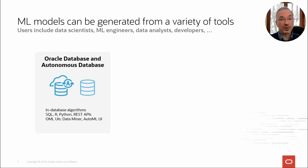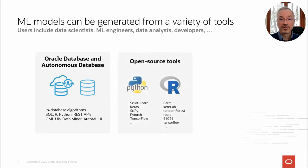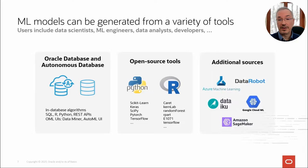These can be accessed from SQL, R, Python, and REST APIs, as well as from no-code user interfaces. Open source tools are also available, with the two most popular being Python and R, along with their rich ecosystems of third-party packages that expand functionality across multiple domains. There are plenty of other tools out there that support AI and ML.